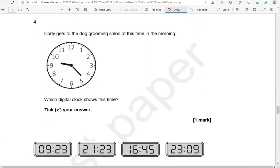Carly gets to the dog grooming salon at this time in the morning. Which digital clock shows this time? So the time is 9, and then counting: 5, 10, 15, 20, 21, 22, 23.